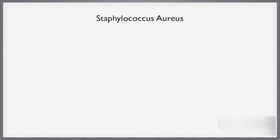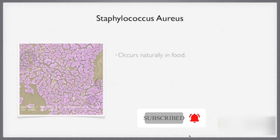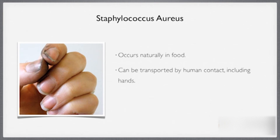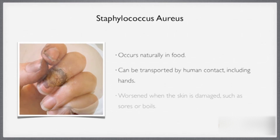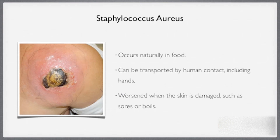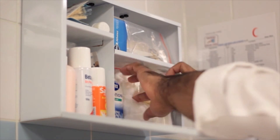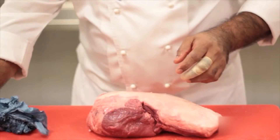Next we have Staphylococcus aureus. This bacterium occurs in food and may be transported from one food to another by human contact, including hands and other parts of the skin. Cross-contamination is worsened when the skin is damaged, such as with sores or boils, as more of the bacteria is harbored in those cuts or scrapes and therefore can be transferred onto the food.